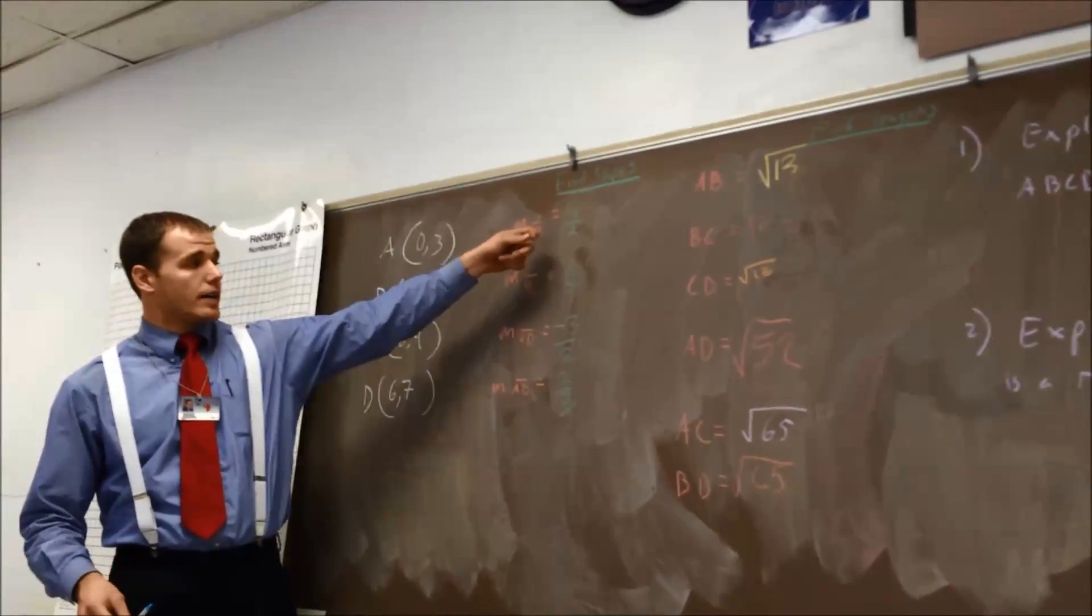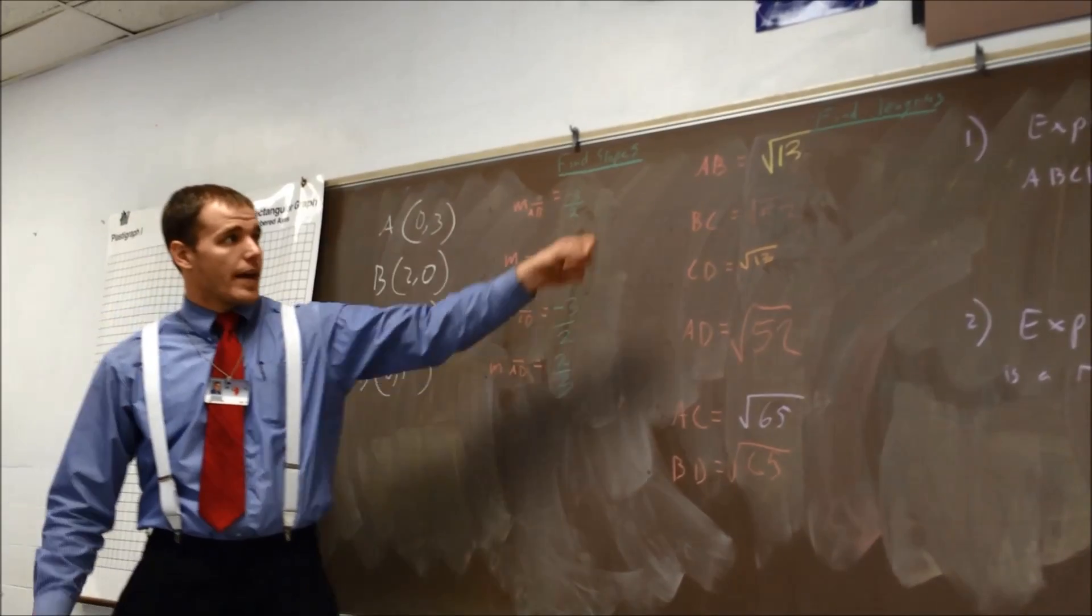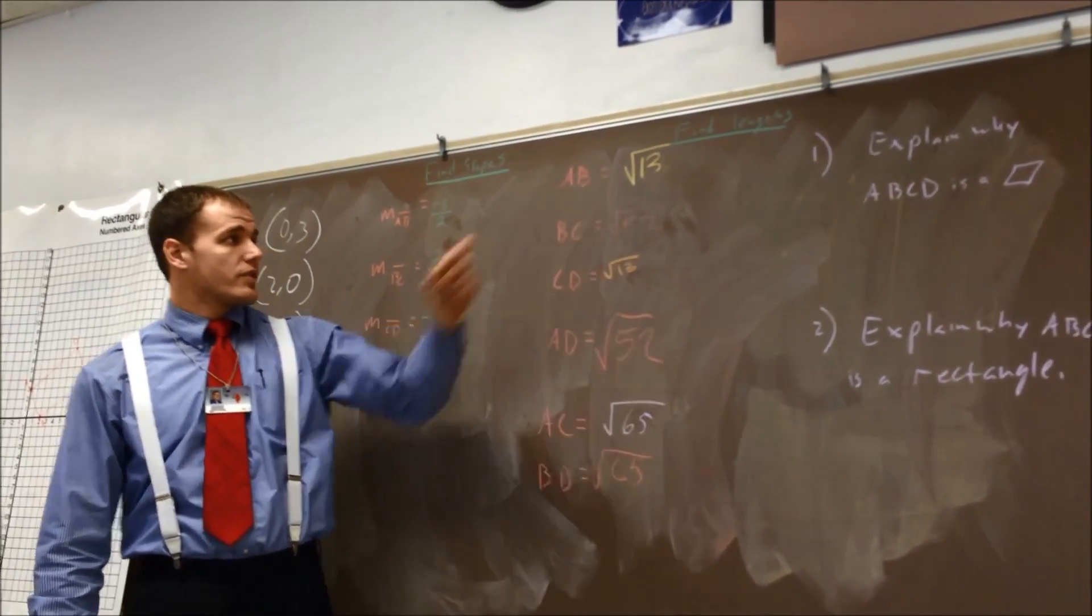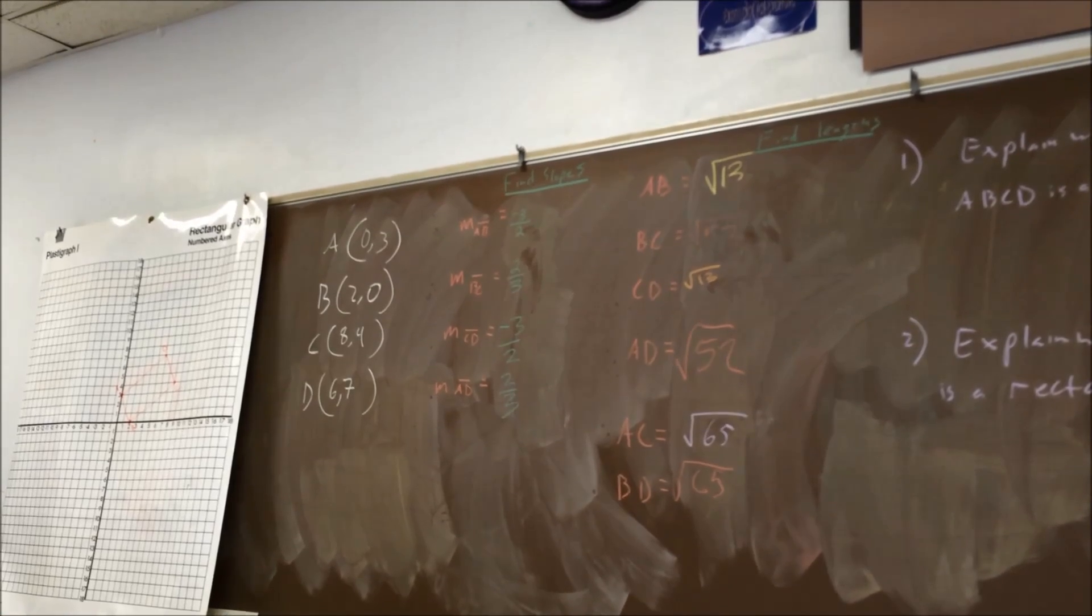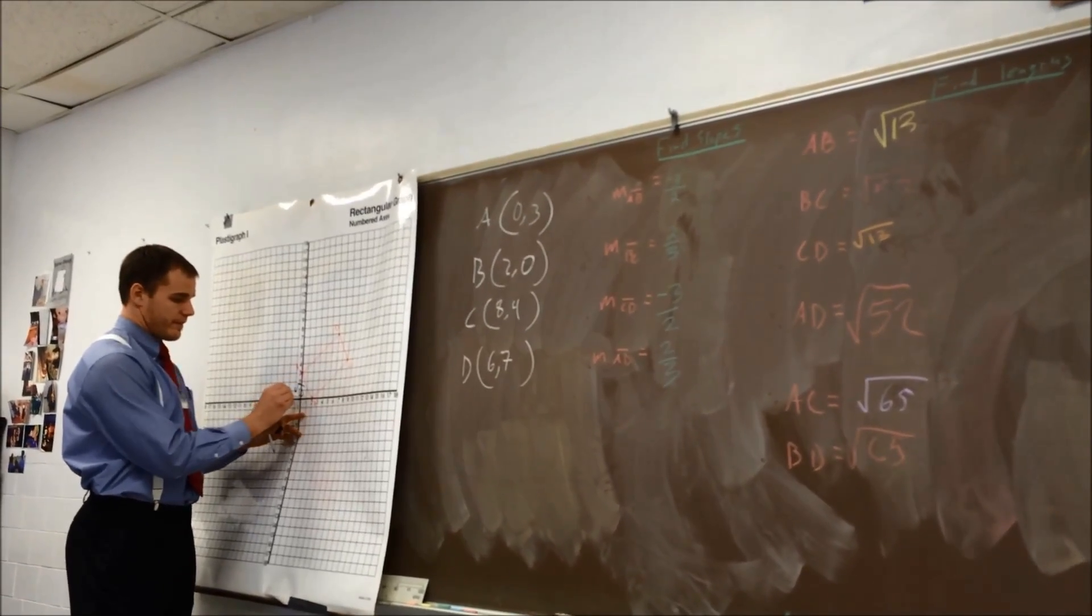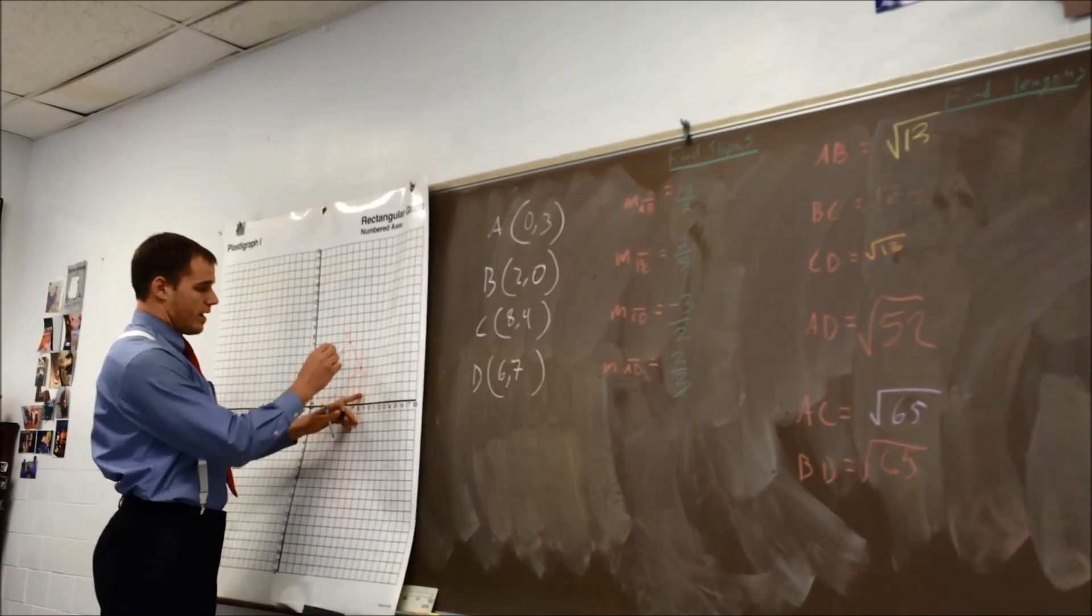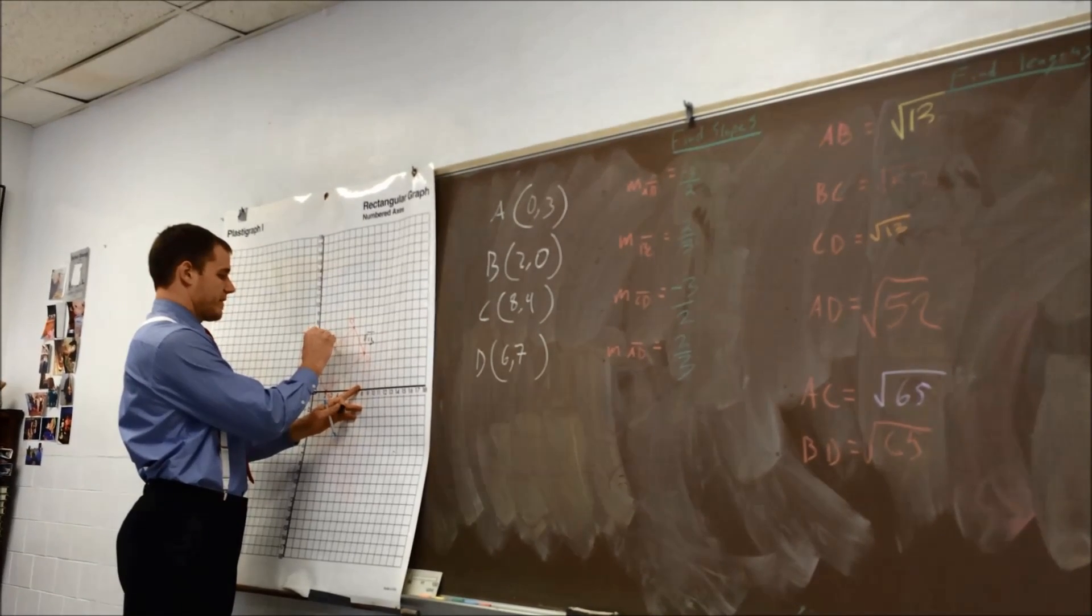Now that we have our information up here, ladies back there found the slopes of each of these, and we have the lengths of each of these, so AB is the square root of 13, DC is also the square root of 13, both of these are the square root of 52.